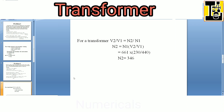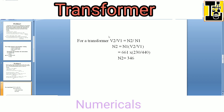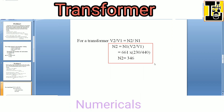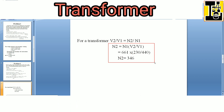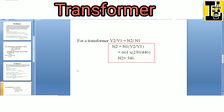We can also solve for N2 by use of the voltage transformer ratio formula, that is V2 by V1 is equals to N2 by N1. So N2 can also be calculated this way, giving 346 turns. So this is the solution for problem number two.